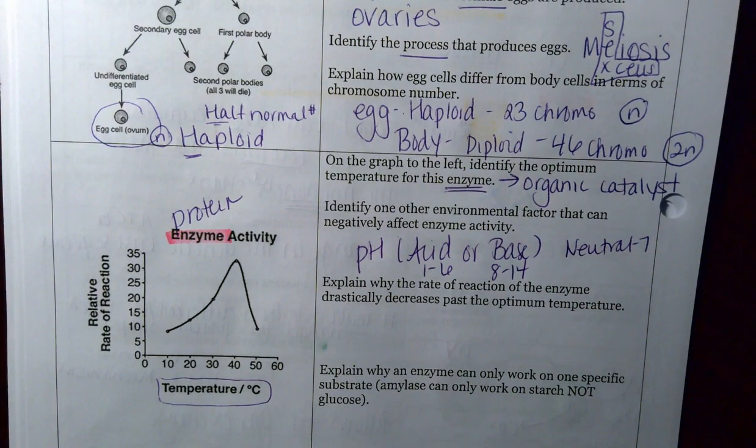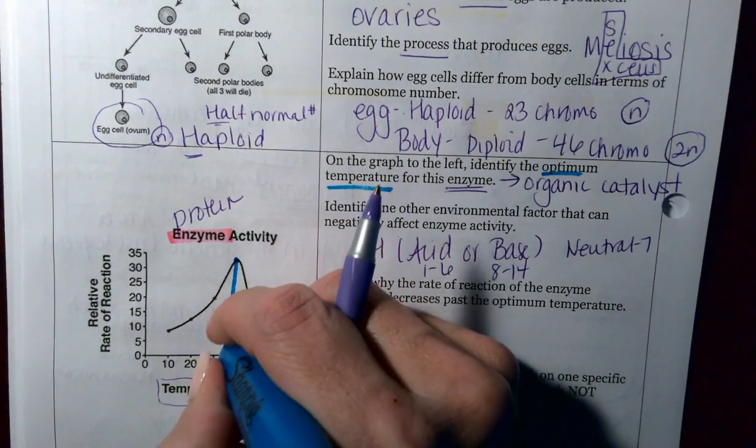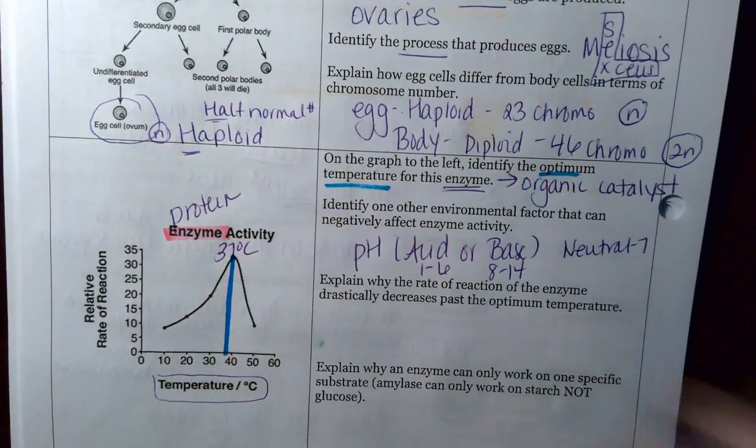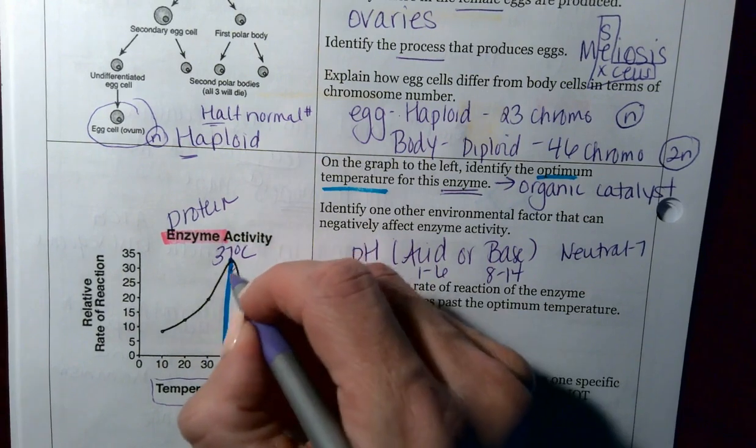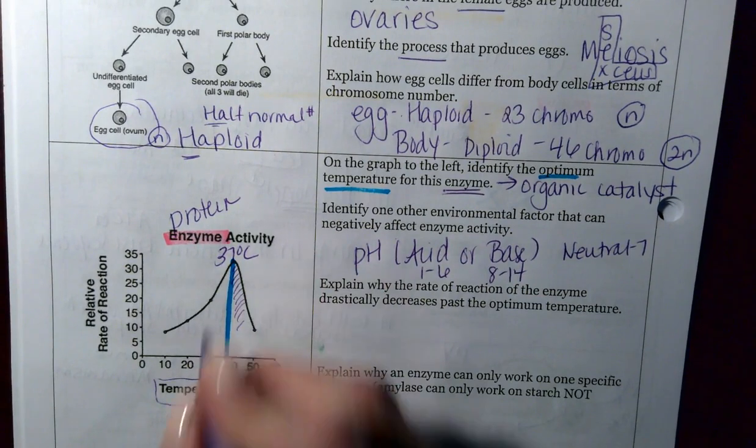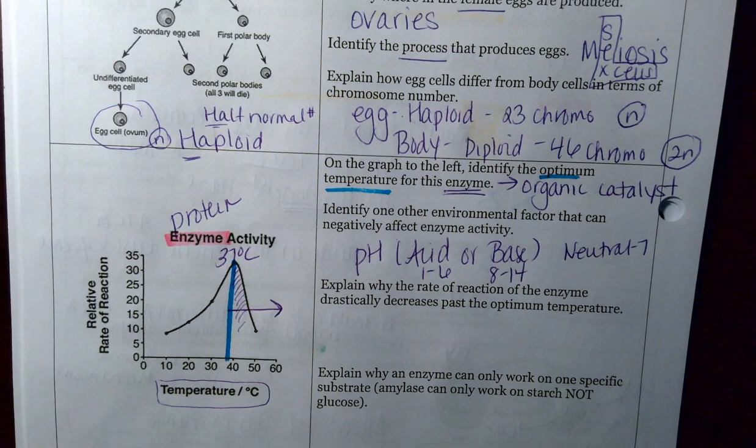Explain why the rate of reaction of the enzyme drastically decreases past the optimum. It does say in the first one, which I never did, to identify the optimum. Optimum is going to be my high point. I draw a line straight down to the best of my ability. That's going to be 37 degrees Celsius, which makes sense. Because if you don't know, 37 degrees Celsius is normal body temperature, which is 98.6, approximately, why all of a sudden, once you get in this section, is the slope so steep for that graph? That's going to be because once you get past here, that enzyme starts to denature or change shape. And once it changes shape, it's not going to be able to work very well, if at all.